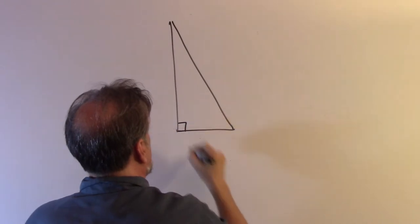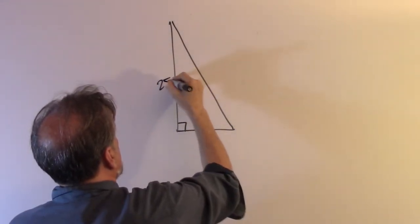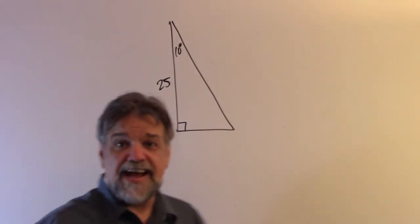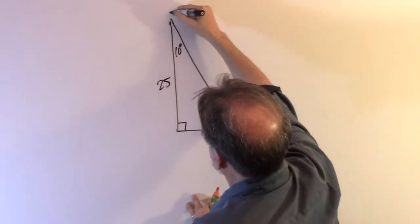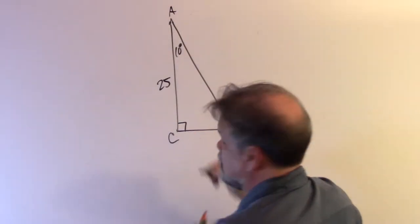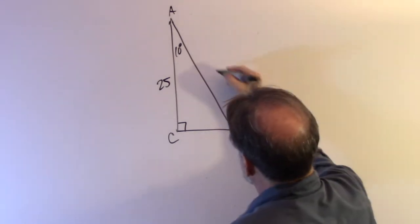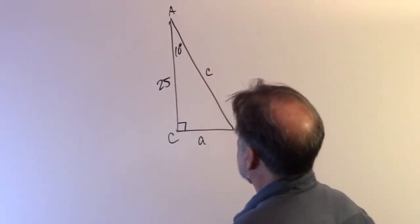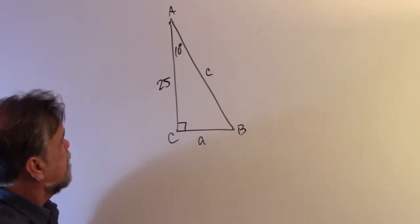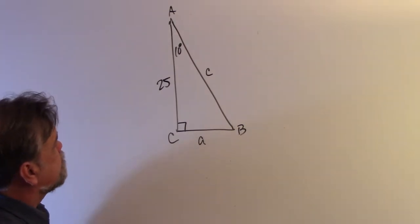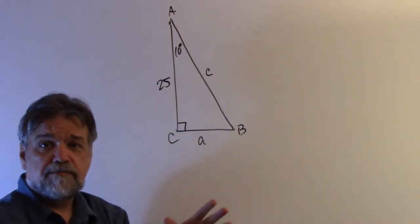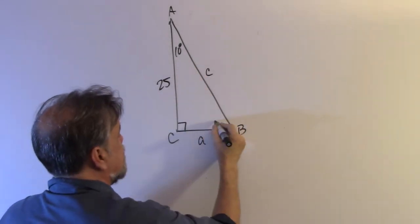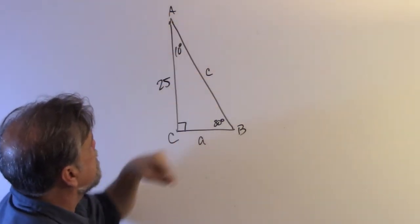Let's do another triangle. This one has a right angle, a side of 25, and an angle of 10 degrees — that's all we know. Label the vertices A, B, and C, with the corresponding sides labeled accordingly. The third angle is easy: 90 minus 10 equals 80 degrees. But let's keep using 10 degrees as our reference angle.